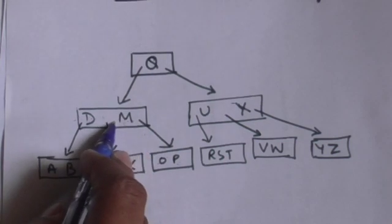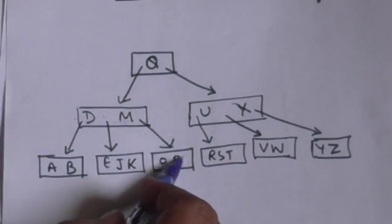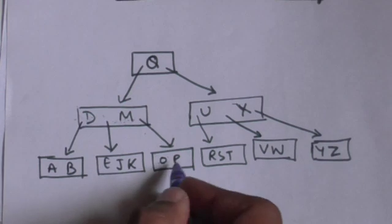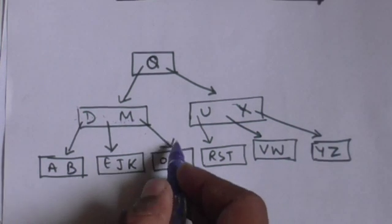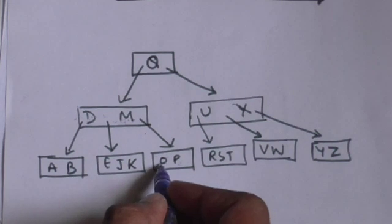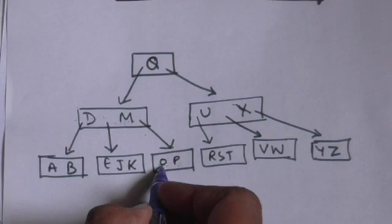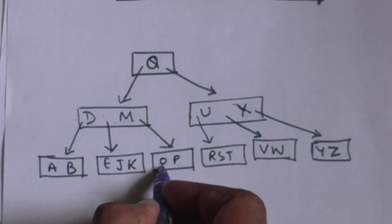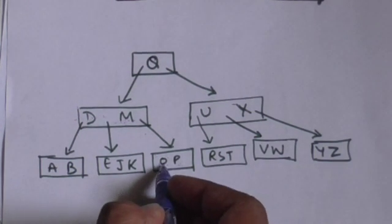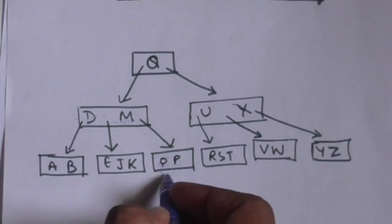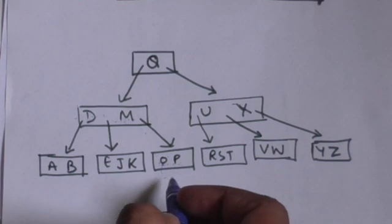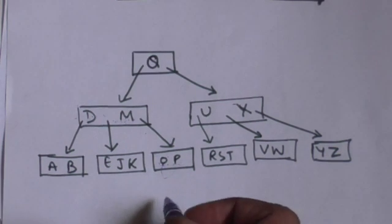We move to the child node which is at the right of key M. We compare key P with the first key of this node, which is O. O is smaller than P, so we move to the next key of this node. The next key is P. In this way we can search a key in a B-tree.